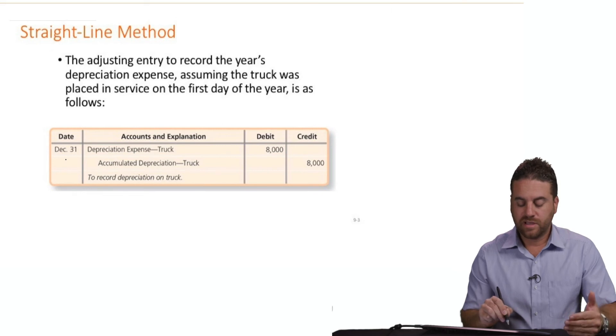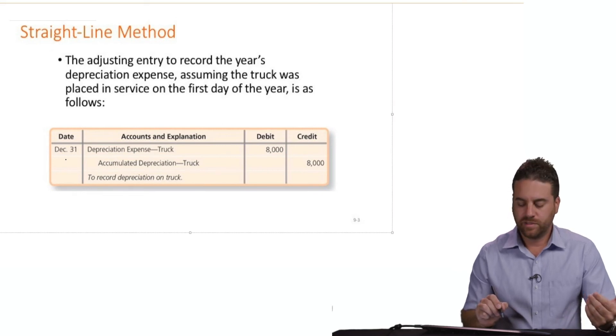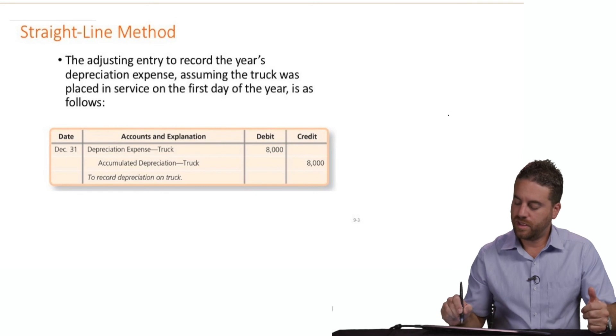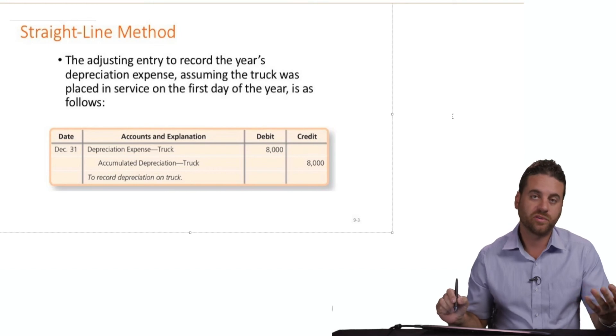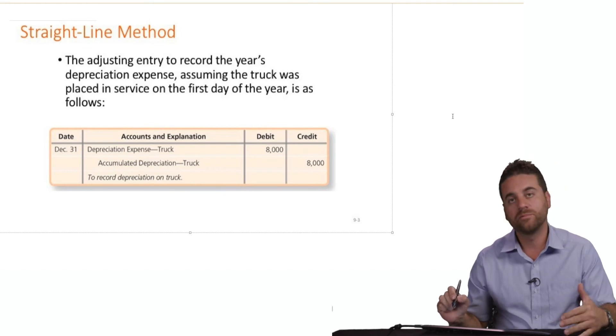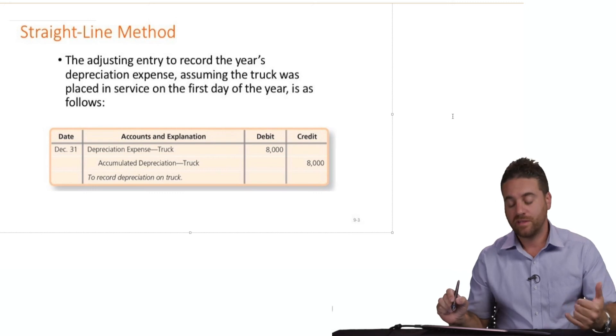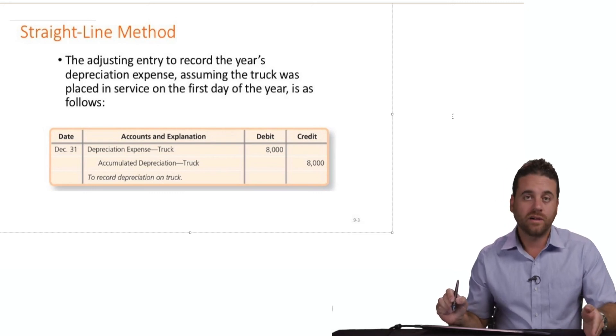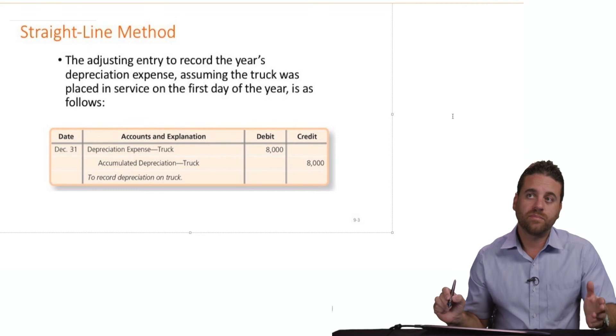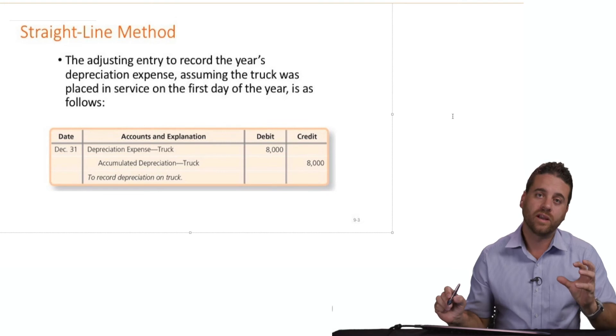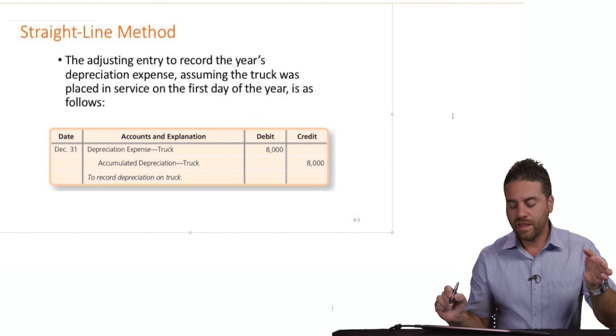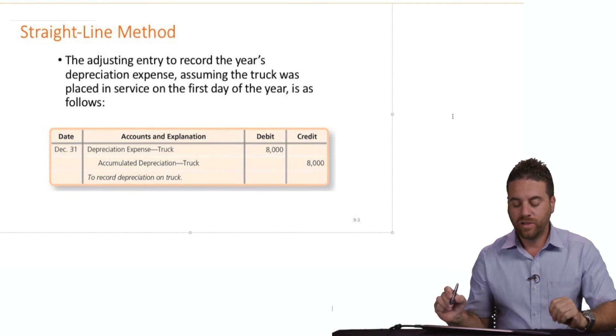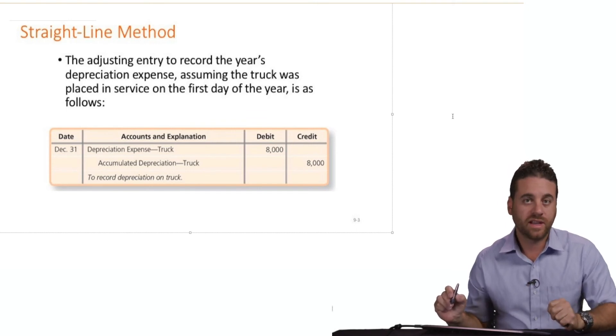In the credit side, we might think, why don't we just say equipment? Because when we first purchased the truck, we recorded it as equipment. So why don't we just credit equipment, which means we're decreasing the value of the equipment? Well, technically yes, we are decreasing the value of the truck. But instead of removing that amount directly from the equipment account, we created another account that would be related to the equipment account. We call it accumulated depreciation.